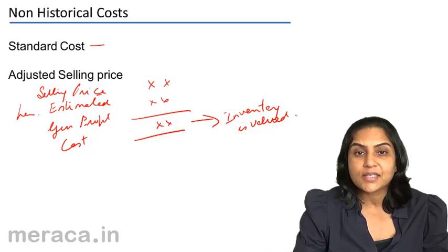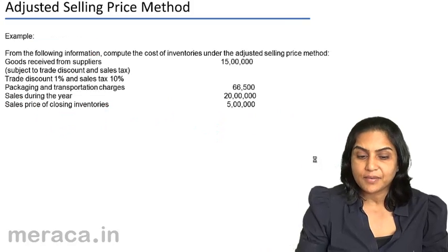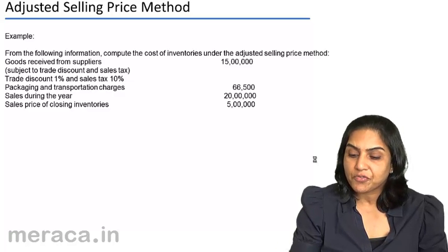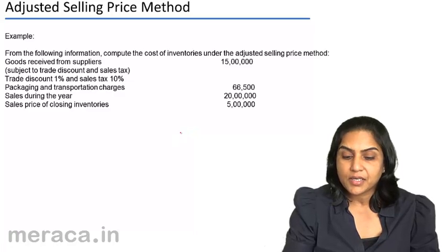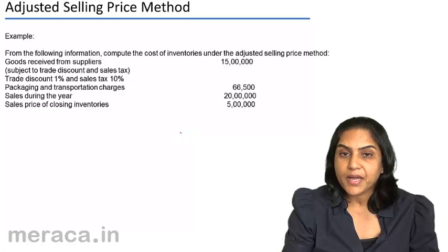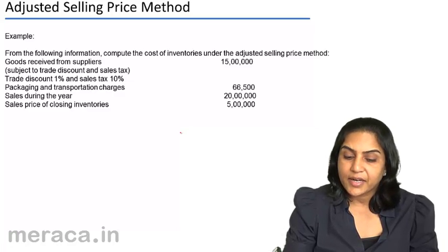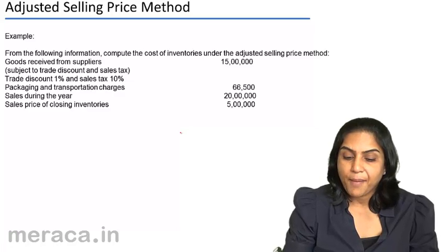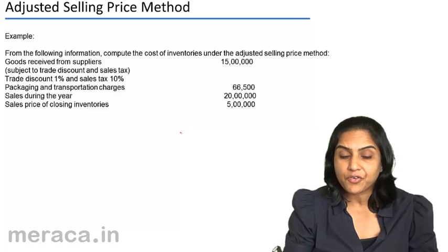This is a recognized method for certain items largely sold under the retail method. To understand this fully, let us do an exercise. From the following information, compute the cost of inventories under the adjusted selling price method. Goods received from suppliers is 15 lakhs, subject to trade discount and sales tax. The trade discount is 1% and sales tax is 10%. Packaging and transportation charges are 66,500.